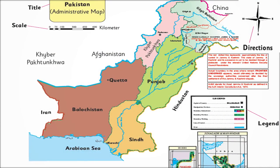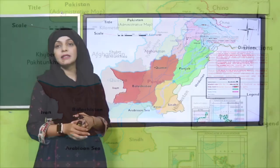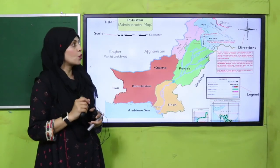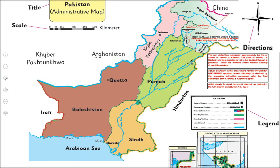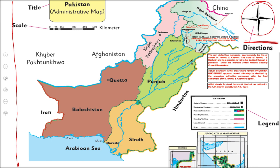Now on this map, quickly find all the different key elements. First, the boundary that denotes the border. Then where is the orientation — this is the orientation or the directions. Then where is the legend — you can find the legend here. Very good. And the scale and the title — so all the key elements are written here.